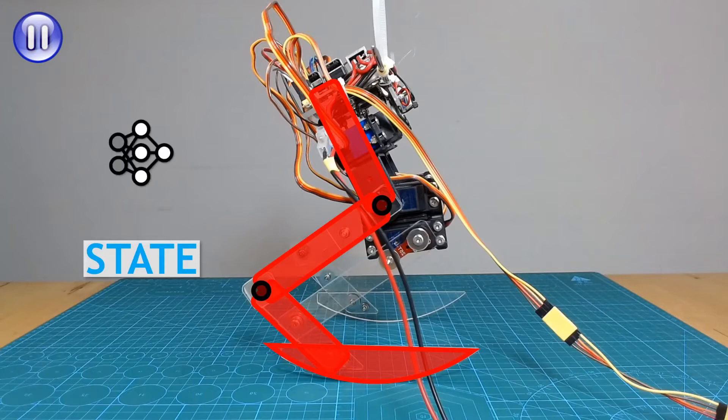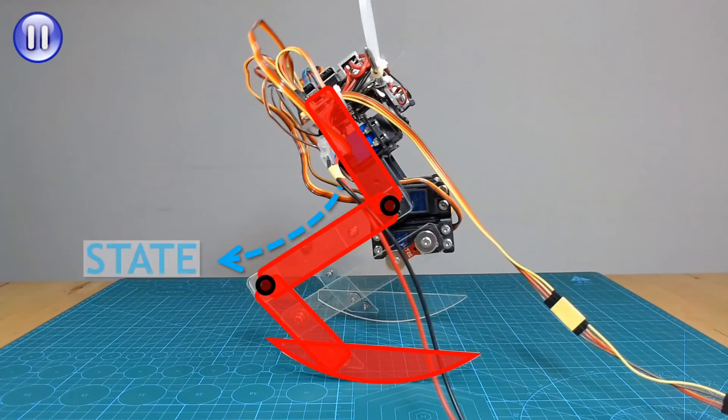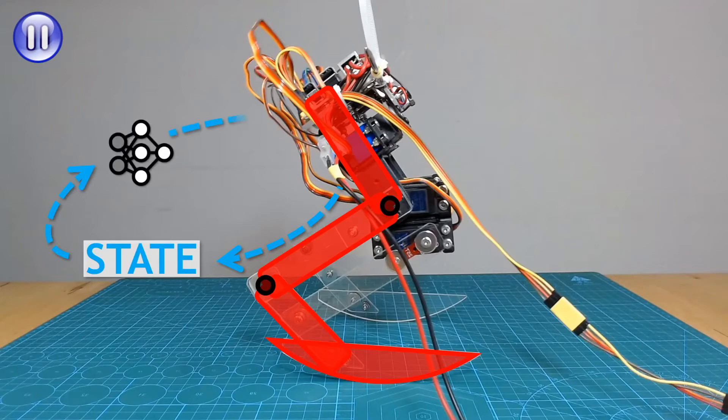And the job of the policy is to use or interpret this state and decide on the next set of servo actions or movements to make. The Raspberry Pi applies the actions, the legs obey the laws of physics and end up in some new state. And so the cycle continues.